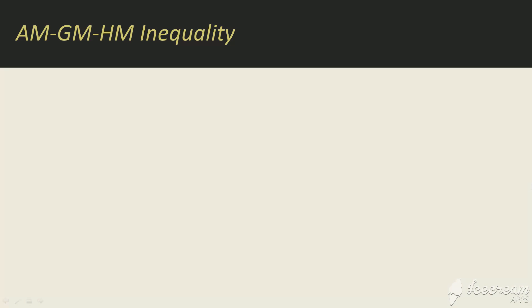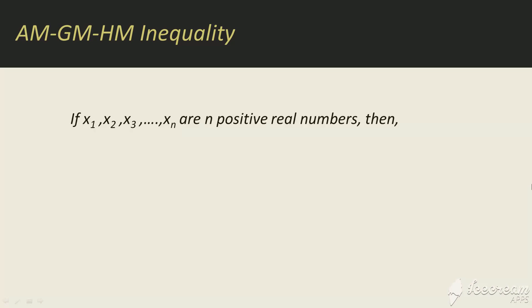Hello friends. Today we will be looking at the AM-GM-HM inequality. The AM-GM-HM inequality states that if we have n positive real numbers, then their AM will be greater than or equal to their GM, which will be greater than or equal to their HM, and the equality will hold when the numbers are equal.